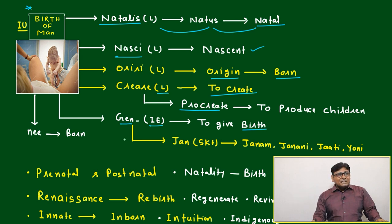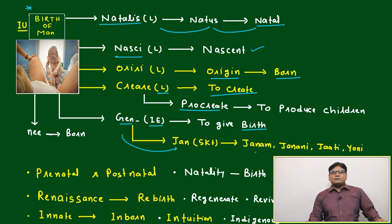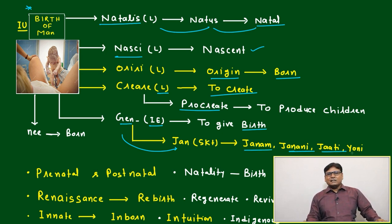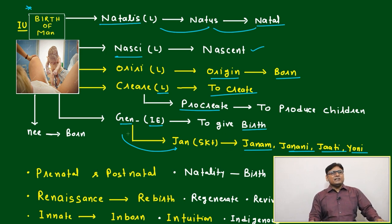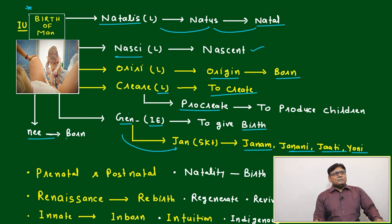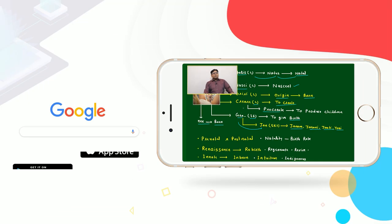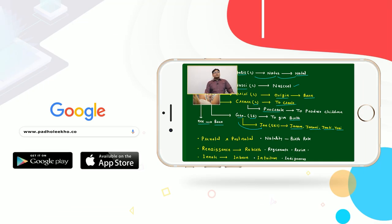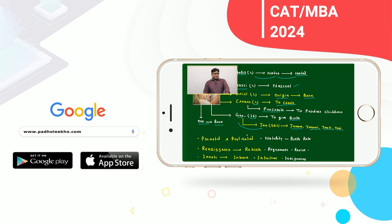From this Sanskrit word has come 'gen', and based on that we have many Hindi, Urdu, and Sanskrit words — janam, janani, jati, yoni, jan — everything is related to this Indo-European root. Another word is 'gno', meaning born. These five roots are related to the birth of a man. This is our idea unit: birth of a man, and based on that these roots will work.